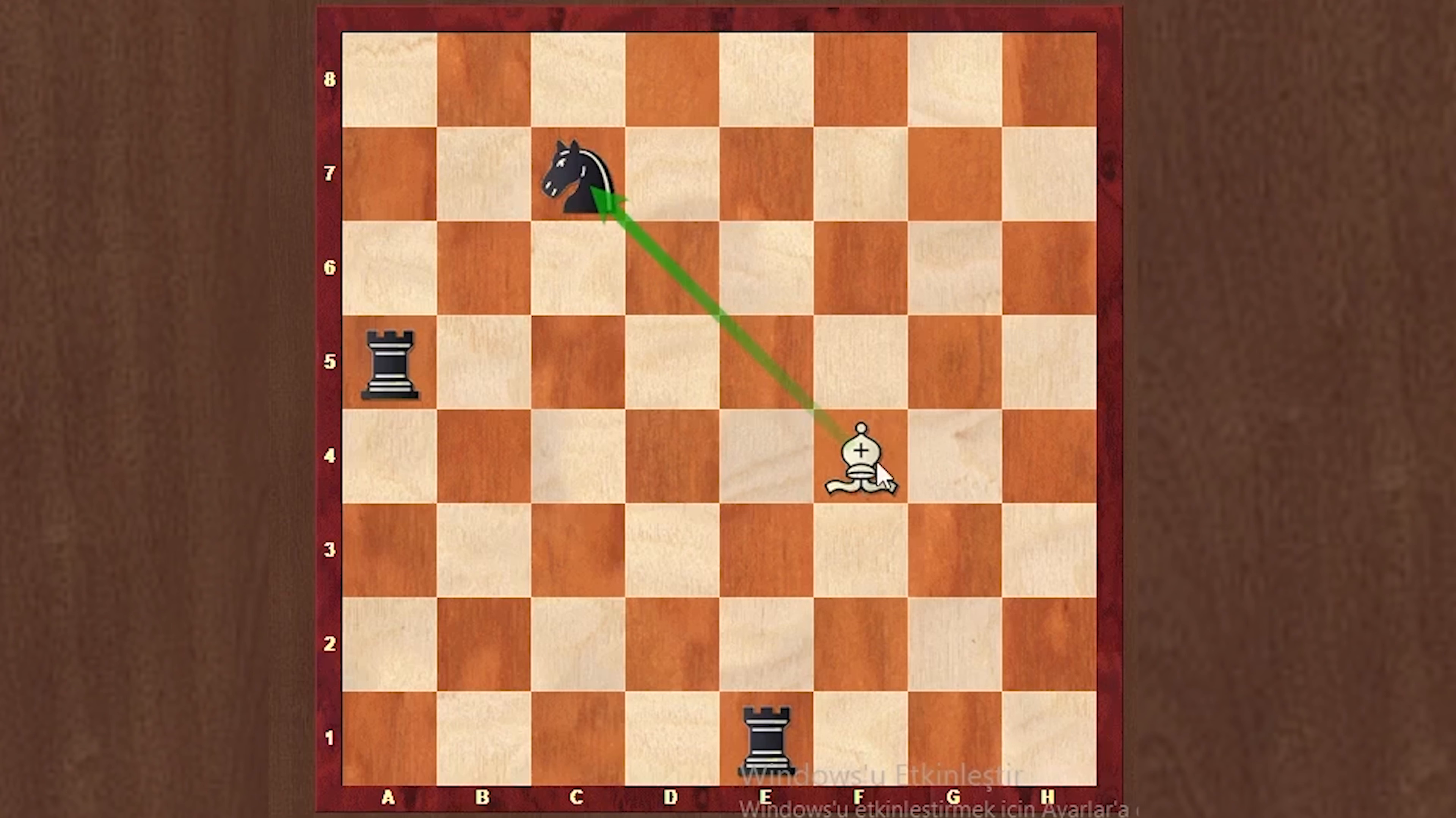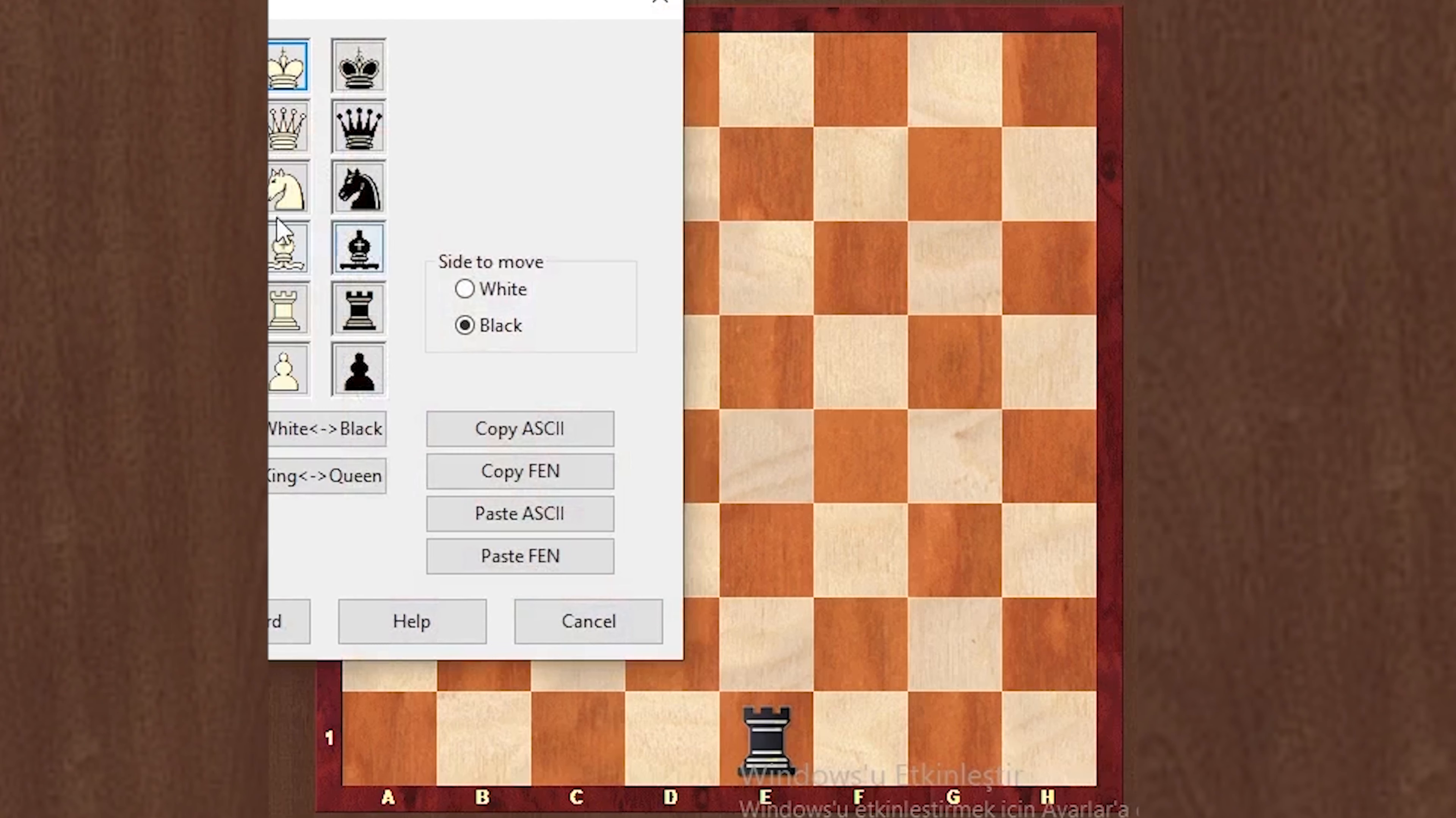Now we have captured the rook. How many points is the rook? We can say that the rook is about five points. If you remember, we said this while talking about the rook. If there is an obstacle in its way, the bishop cannot jump over it. If the way was clear, he could have won this rook and won five points.